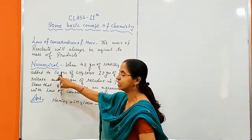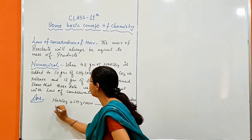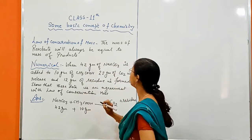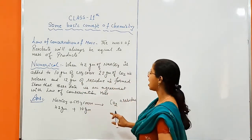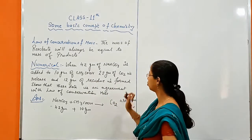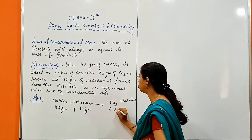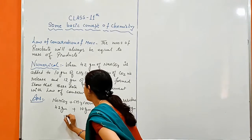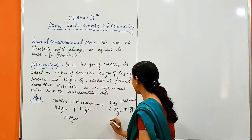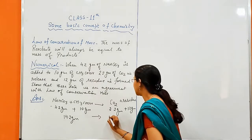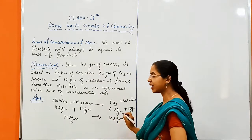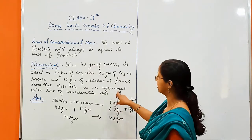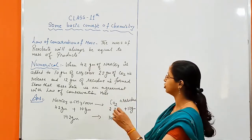Now we add the two reactants: 4.2 grams plus 10 grams. And for the products, CO2 is 2.2 grams and the residue is 12 grams. Adding both sides gives 14.2 grams on each side. The mass of the reactants is equal to the mass of the products, so this data is in agreement with the law of conservation of mass.